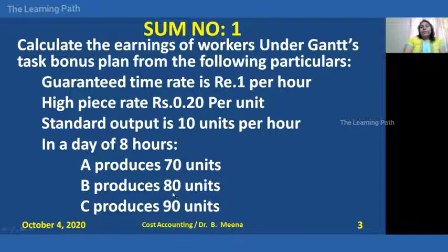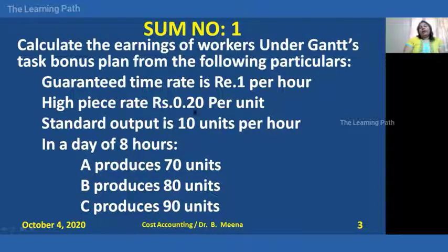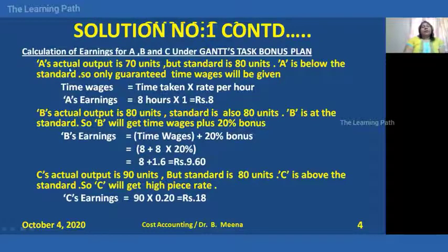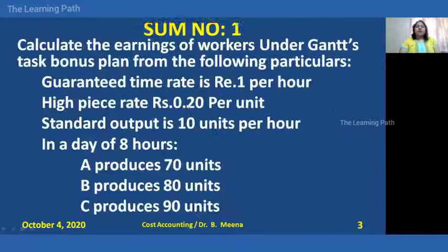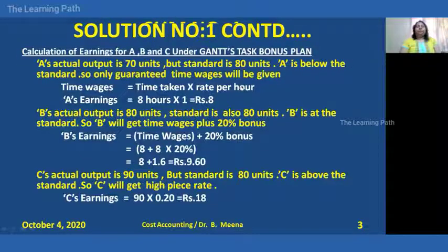Now let's calculate the earnings. Worker A's actual output is 70, but the standard is 80, so A is below standard and gets only the guaranteed time wages. The time wages formula is: time taken multiplied by rate per hour. The time taken for all three workers is 8 hours. So A's earnings = 8 hours × ₹1 per hour = ₹8.